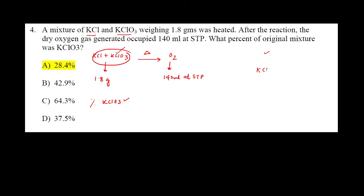The oxygen information has nothing to do with KCl; it has only a relationship with KClO3. KClO3 when heated gives KCl plus oxygen. So let's balance this equation: 2KClO3 → 2KCl + 3O2. This is the balanced equation we are going to use.